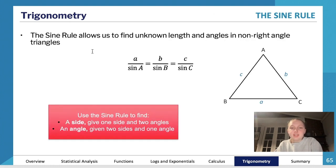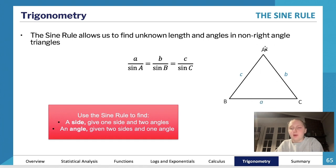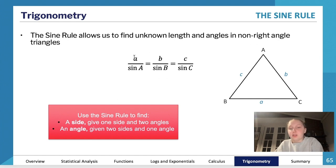Moving on to trig rules: the sine rule allows us to find unknown lengths and angles in non-right angle triangles. It states that a/sin A = b/sin B = c/sin C, where lowercase letters are sides and uppercase are angles. You use the sine rule to find a side if given one side and two angles, or an angle if given two sides and one angle. You need three pieces of information, with two being the same type — either two sides and one angle, or two angles and one side.